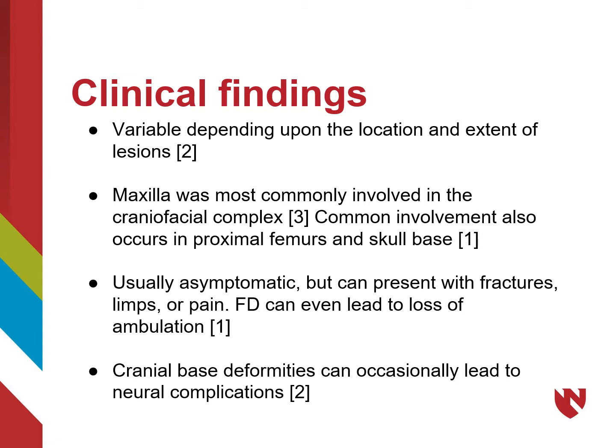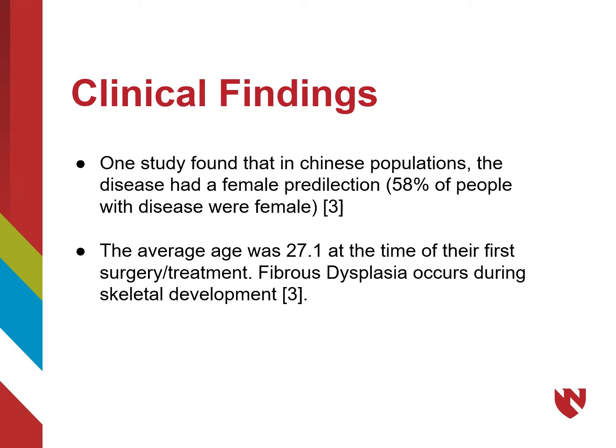A possible rare symptom is occasional neural complications caused by cranial base deformities. Each of these symptoms can be important for determining diagnosis. In regards to the population that fibrous dysplasia affects, one study discovered that among Chinese populations, fibrous dysplasia is more likely to affect females, with 58% of patients with fibrous dysplasia being female. The average age of a patient being treated surgically for fibrous dysplasia was 27.1.